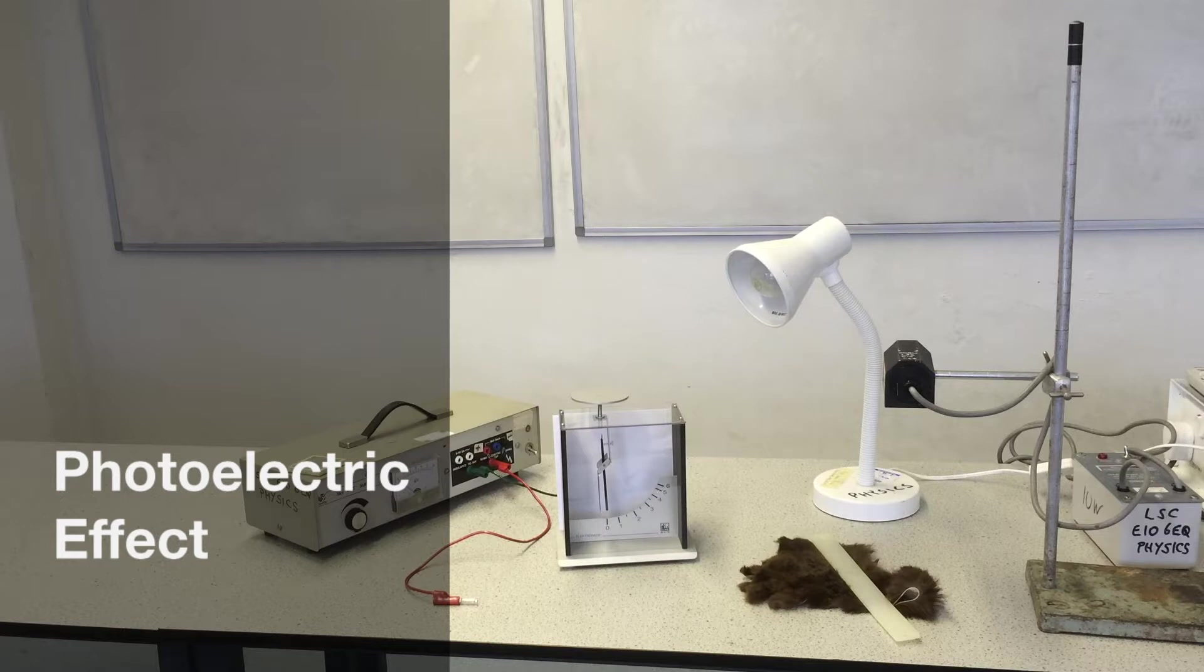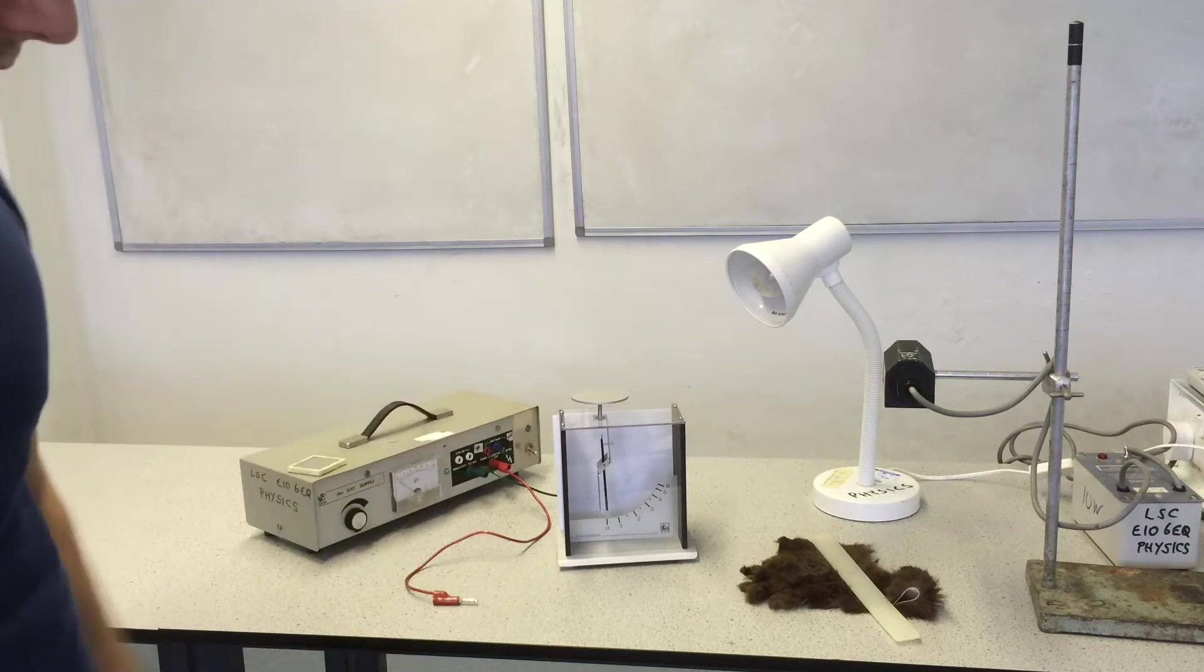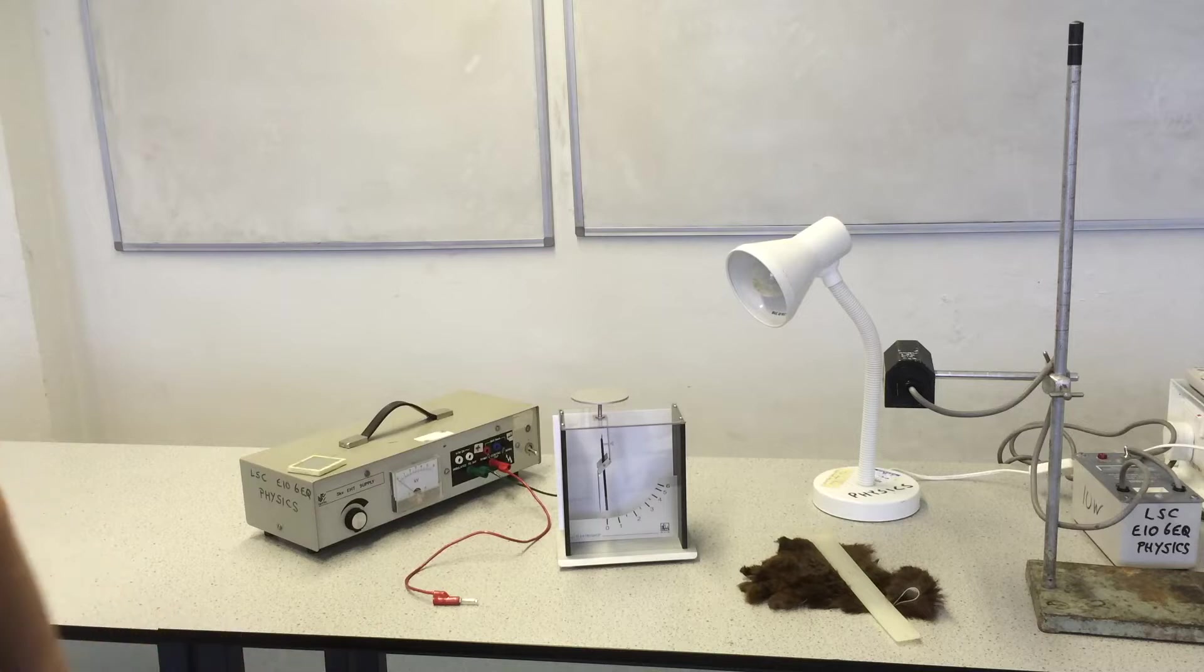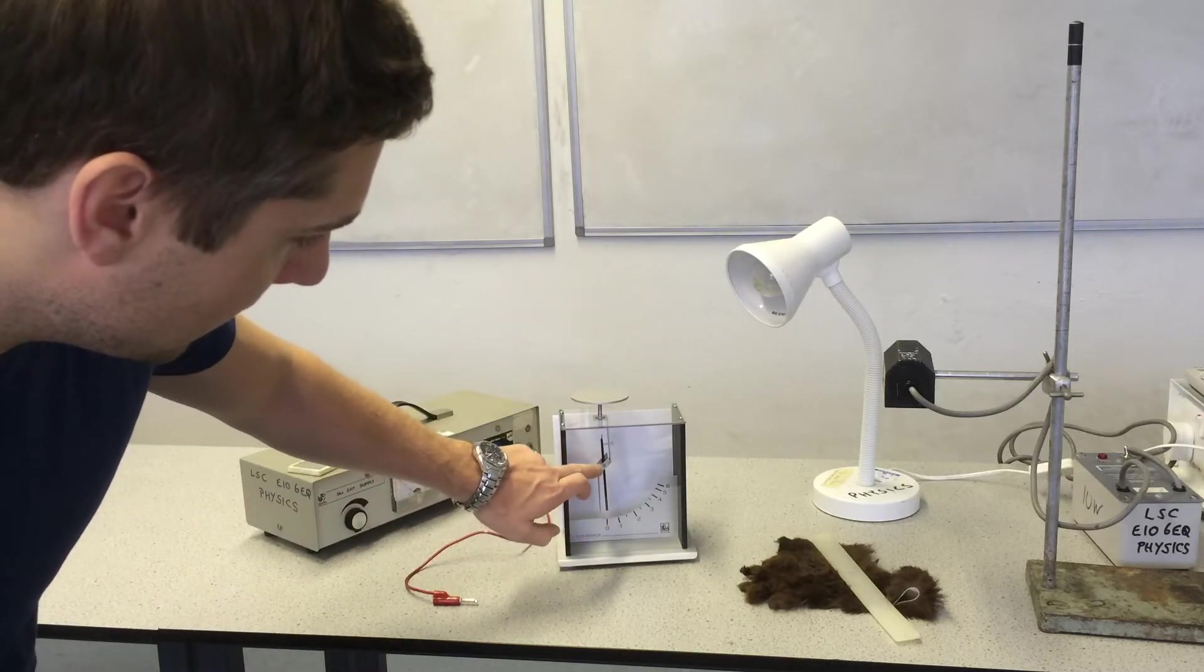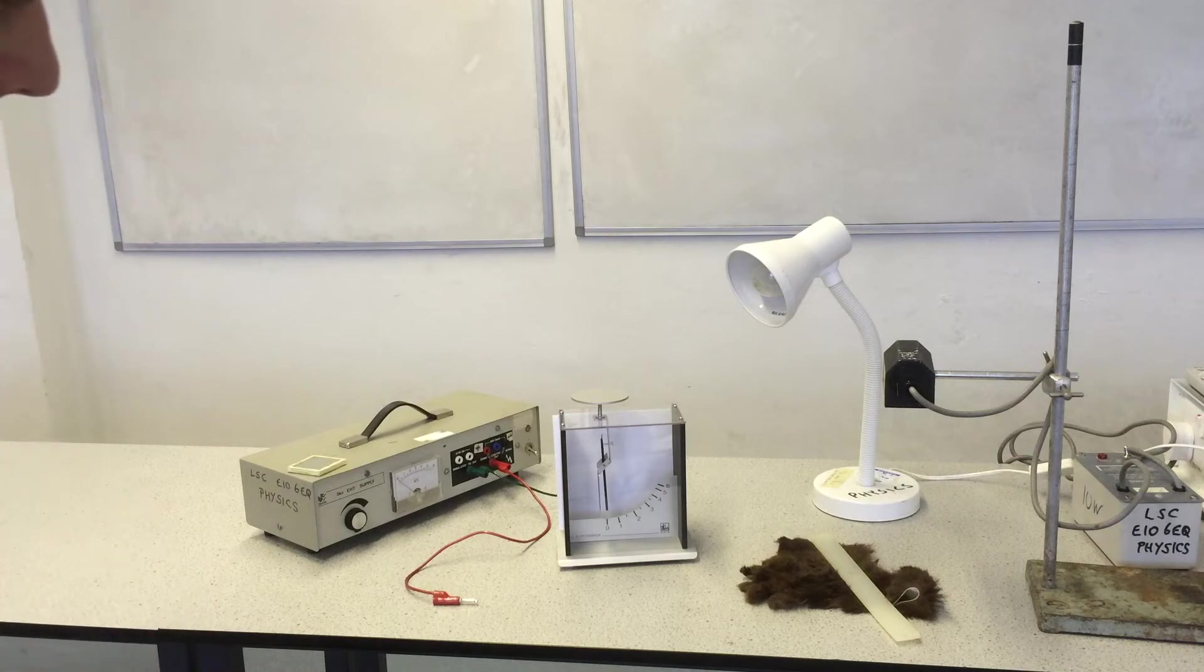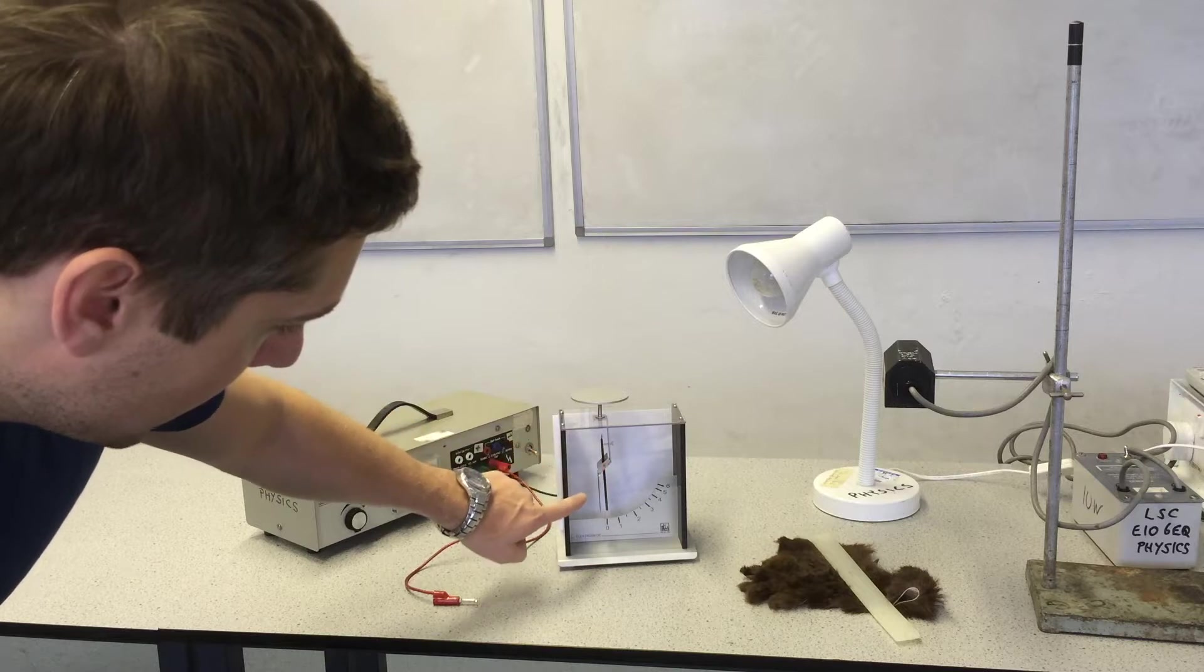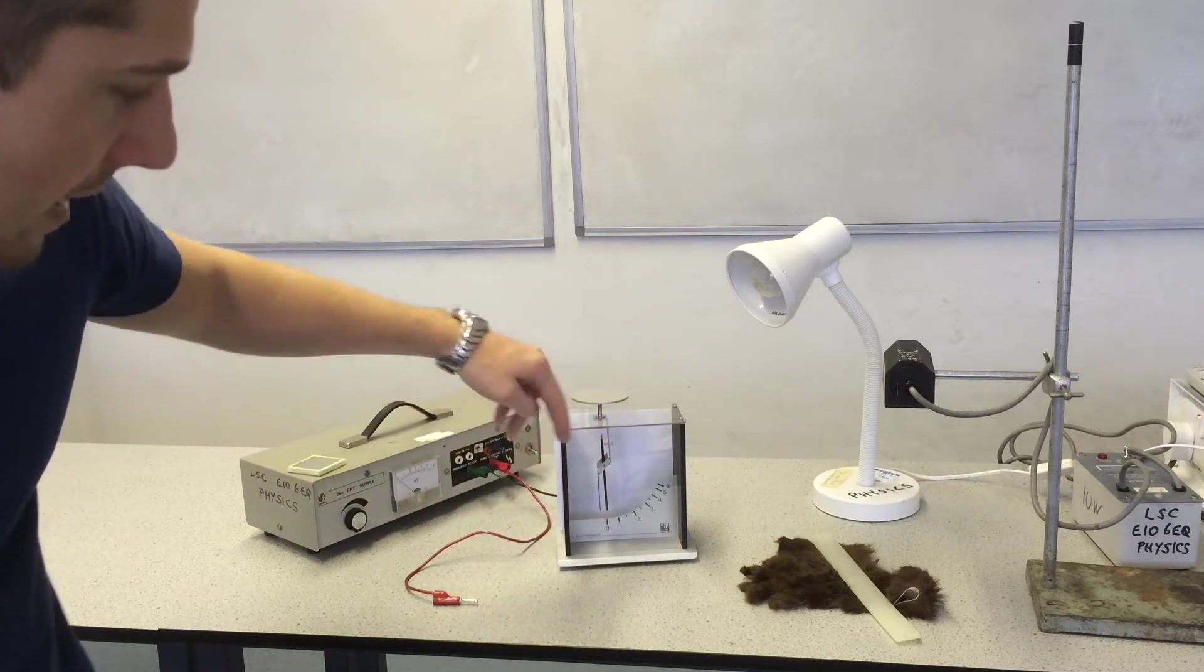This experiment is the photoelectric effect, and it's all going to center around this, which is an electroscope. This is not a gold leaf electroscope. Instead of that, it has a rod which is pivoted roughly in the middle, and this stem has this diagonal section in the middle so that part of the stem is on one side of the rod and part of the stem is on the other side of the rod.